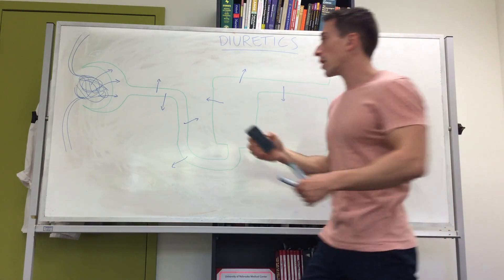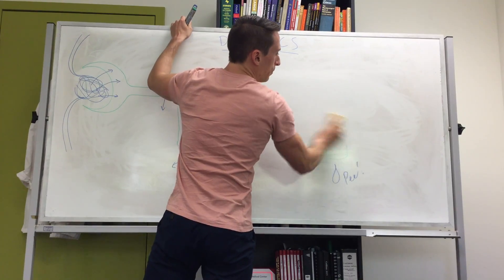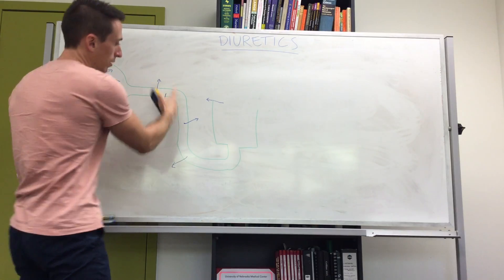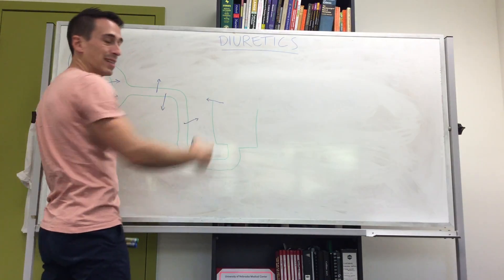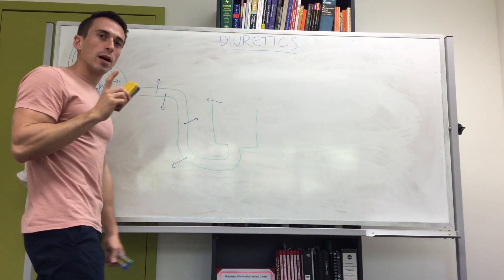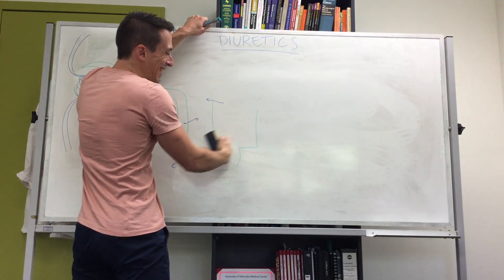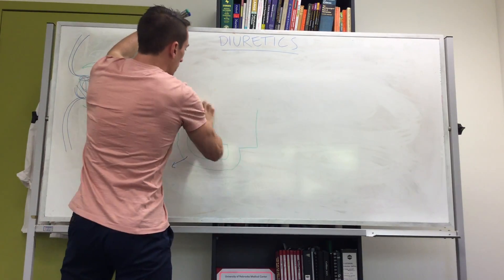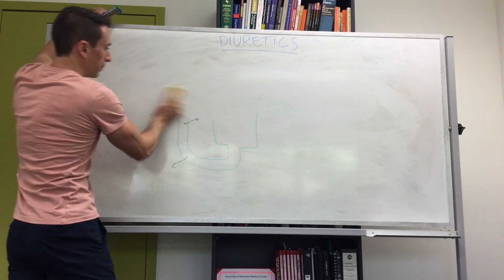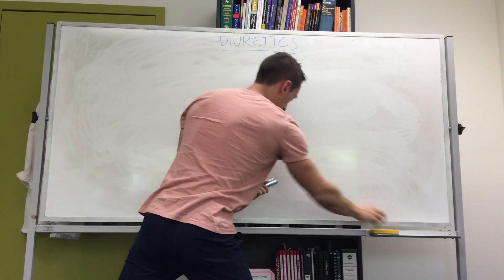The first category I want to talk about is loop diuretics. Hence the name, loop diuretics act at the loop of Henle — but specifically at the thick ascending aspect of the loop of Henle. I'm going to wipe this out and draw it a lot larger for you.